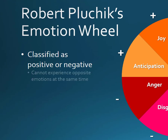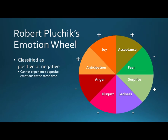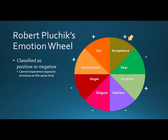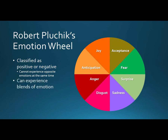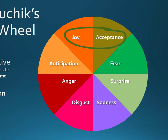According to Plutchik, we cannot experience opposite emotions at the same time, such as the positive emotion of acceptance and the negative emotion of disgust. In fact, this is a major criticism of Plutchik's approach, as many disagree, citing the example of joy and sadness on opposite ends of the emotion wheel—a positive and a negative emotion—which many parents report feeling when their children head off to college or get married. He did suggest that we can experience blends of emotions. If you look at the emotion wheel, joy and acceptance are right next to each other; if you combine these two, you'll have the complex emotion of love.